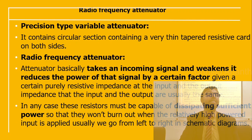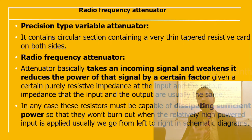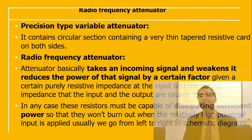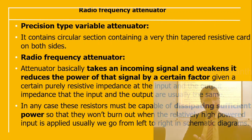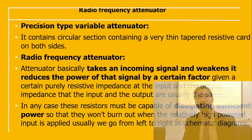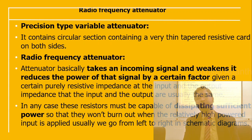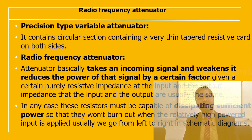The precision type variable attenuator has a circular section consisting of very thin tapered resistive cards on both sides. The radio frequency attenuator takes an incoming signal and weakens it, reducing the power by some factor. It presents a purely resistive impedance at the input and output — the input and output impedances are usually the same. The resistors must dissipate sufficient power so they do not burn out when a high input is applied.